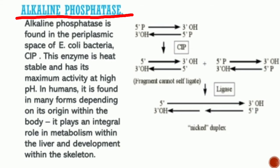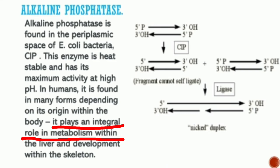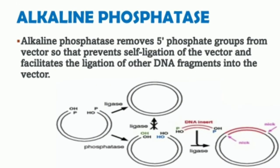The second end modification enzyme is alkaline phosphatase, obtained from various sources including the periplasmic space of E. coli bacteria and calf intestinal tissue. This enzyme is heat stable and has its maximum activity at high pH. In humans it is found in many forms depending on its origin within the body, playing an integral role in metabolism within the liver and development within the skeleton. Alkaline phosphatase removes the phosphate group from the 5' end of DNA molecules, which prevents these molecules from being ligated to one another. Bacterial alkaline phosphatase is more stable but less active than calf intestinal alkaline phosphatase. This enzyme is used in DNA cloning as it prevents the recircularization of plasmid DNA and improves the efficiency of DNA cloning.